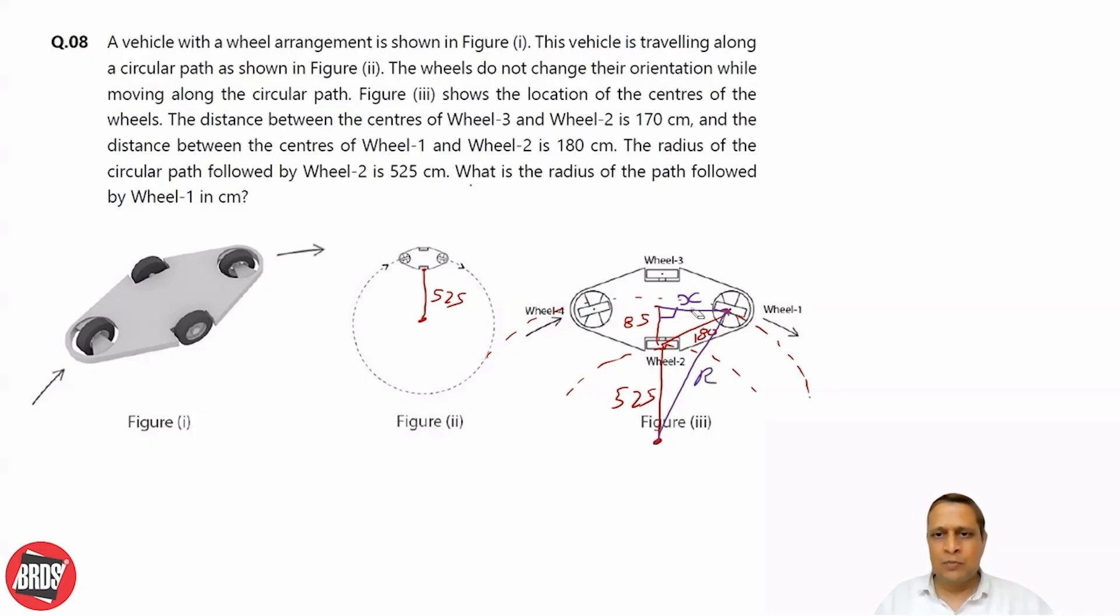How do you get x? From this smaller triangle, you apply Pythagoras theorem. So you have x² + 85² = 180². So x² = 180² - 85². 180² is 32400, 85² is 7225, and that gives 25175 as the value of x². It's not x, it is x².